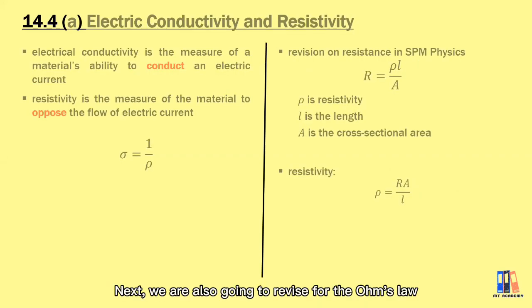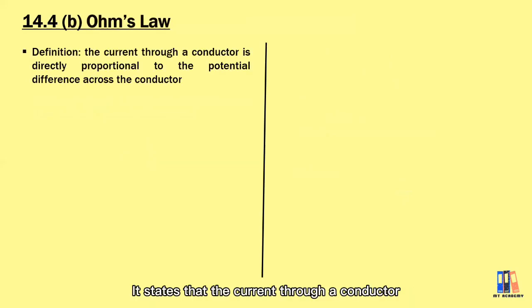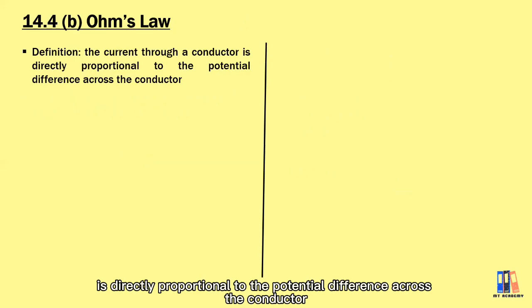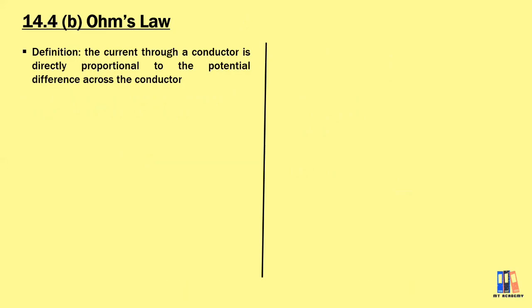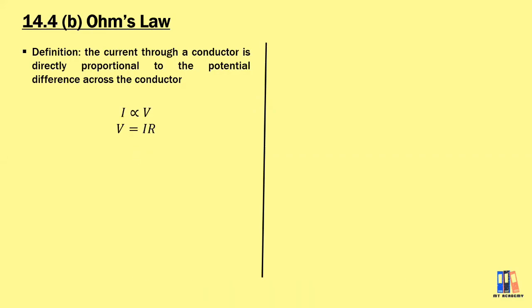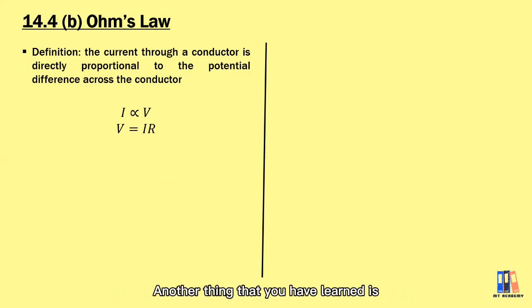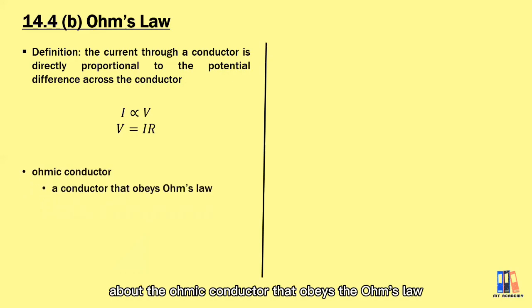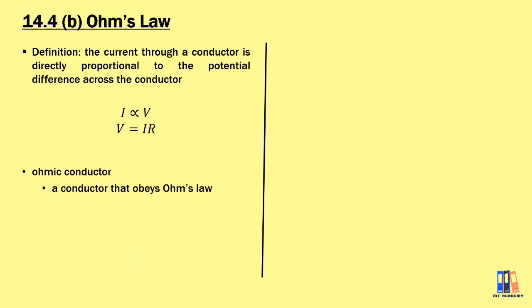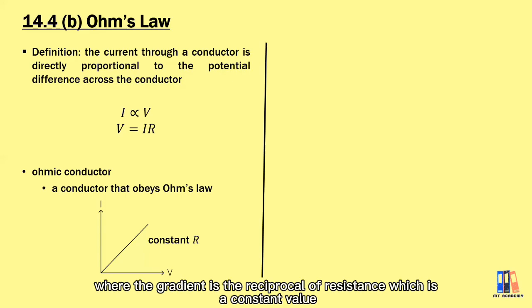Next we are also going to revise Ohm's law, which states that the current through a conductor is directly proportional to the potential difference across the conductor. We have the formula V equal to IR from Ohm's law. An ohmic conductor obeys Ohm's law — when you plot the graph of I against V, you get a linear graph where the gradient is the reciprocal of the resistance, which is a constant value.